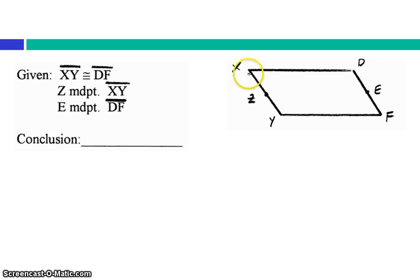Here we know that this whole segment is congruent to this other whole segment, and that Z is a midpoint of XY, so that these are congruent, and E is a midpoint of DF, so I know that those are congruent. Notice I'm only marking things congruent right now that I know for sure are congruent.